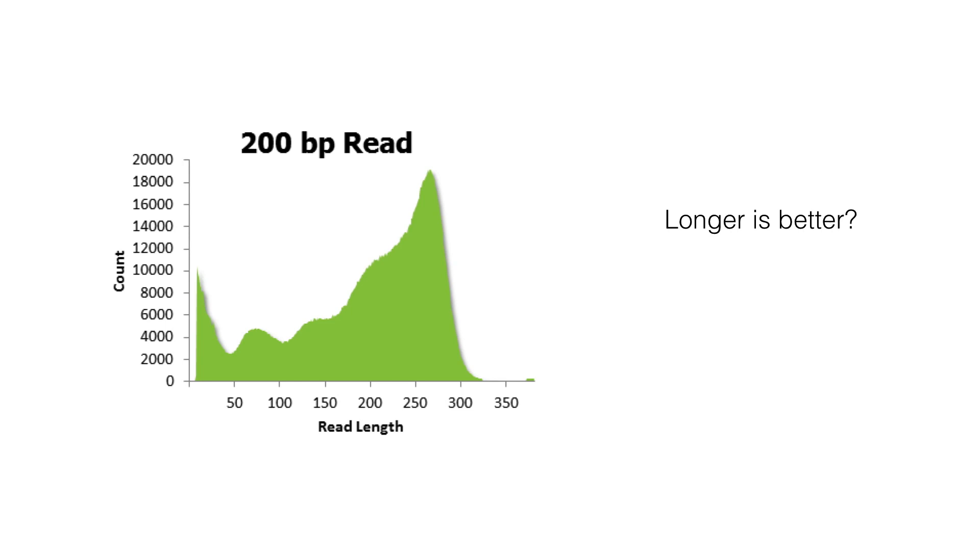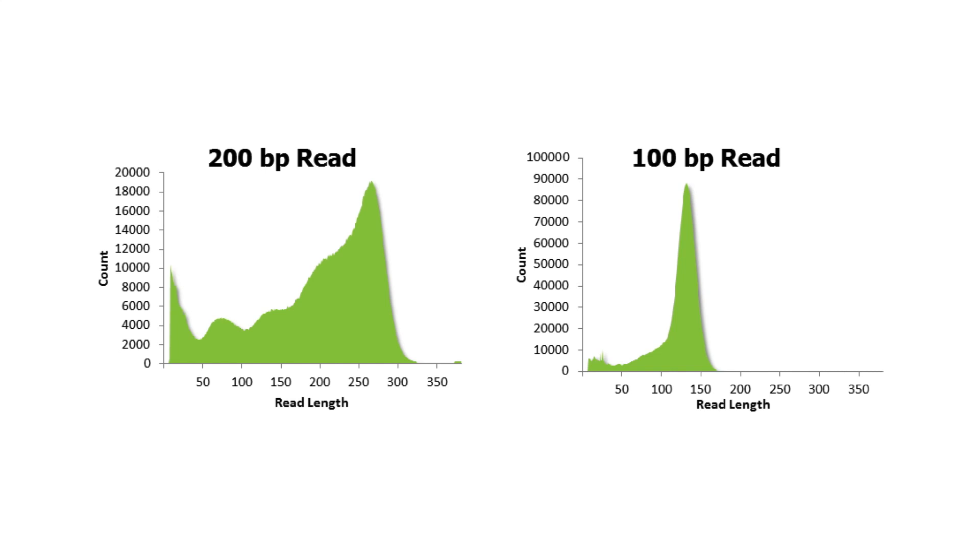Longer is better? Longer reads make better assemblies because they span more repeats. However, in practice, long inserts tend to be less reliable, with a much higher variance in their length distribution. The length of the reads in the output can also vary. In the figure, you can see a graph representing length of the read distribution output from Ion Torrent on the left and Illumina on the right. While the Ion Torrent has longer reads, the Illumina reads are all of the same length.